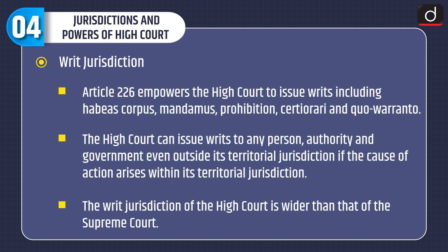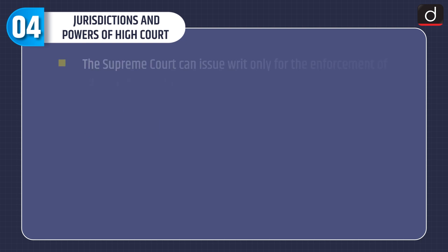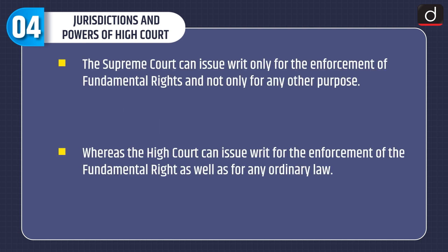Article 226 empowers the High Court to issue writs including habeas corpus, mandamus, prohibition, certiorari and quo warranto. The High Court can issue writs to any person, authority and government even outside its territorial jurisdiction if the cause of action arises within its territorial jurisdiction. The writ jurisdiction of the High Court is wider than that of the Supreme Court. The Supreme Court can issue writs only for the enforcement of fundamental rights, whereas the High Court can issue writs for enforcement of fundamental rights as well as for any ordinary law.